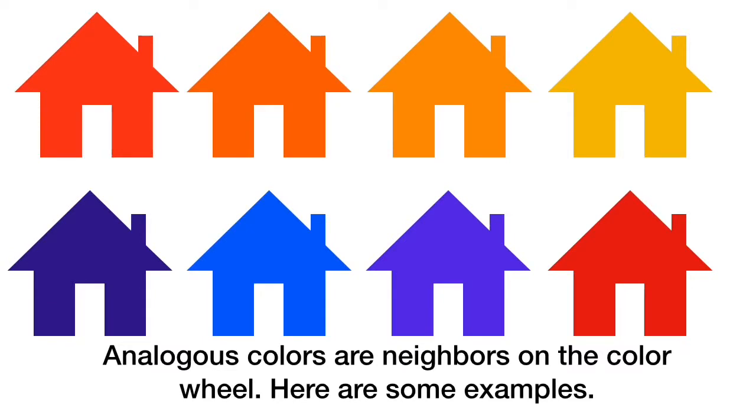Here are the analogous colors. Analogous colors are neighbors on the color wheel. Here are some of the examples. You would have to look at the color wheel to come up with the other neighbors. But you're looking at around the color wheel at three or four colors that are right next to each other on the color wheel that really blend well together. So for example, the top row here is red, red orange, orange and yellow orange. The bottom row is blue violet, blue, violet and red. Those are just some of the examples.